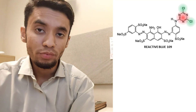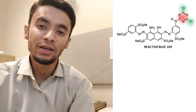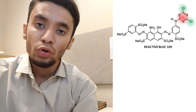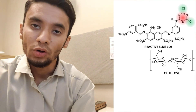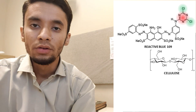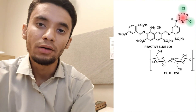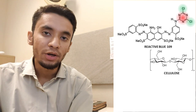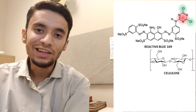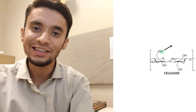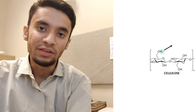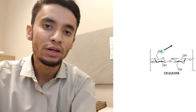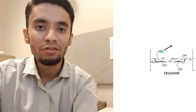A nucleophile has to be comparatively stronger to replace this chlorine group in order to react with the substrate. Now, as you can see in this other diagram of the cellulose structure, there is no specific nucleophile already present in that structure. But as we know, in alkaline medium, deprotonation takes place and those hydroxyl groups present in the cellulose get deprotonated — their H⁺ ion is released — resulting in the generation of a nucleophile within the cellulose structure.